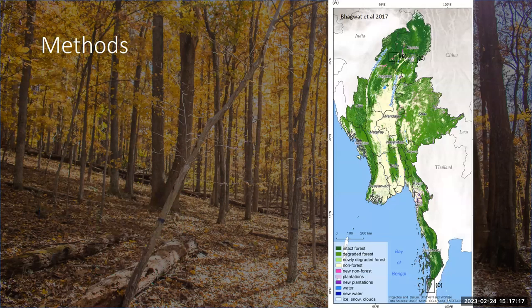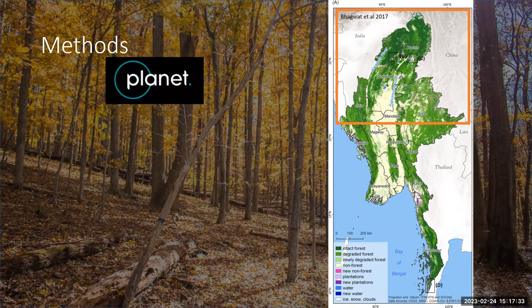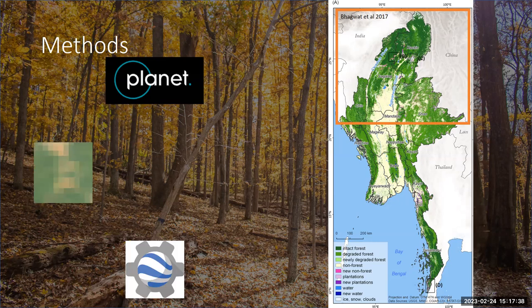We decided to focus on Myanmar as one of the most forested countries in Southeast Asia but with high rates of deforestation. Specifically, we focused on the northern half of the country because it contains the largest concentration of intact forest while being a good representation of different forest types. We manually identified training points with PlanetScope imagery and, using Google Earth Engine, downloaded surface reflectance data for Landsat 8, Sentinel-2, and Sentinel-1 backscatter.